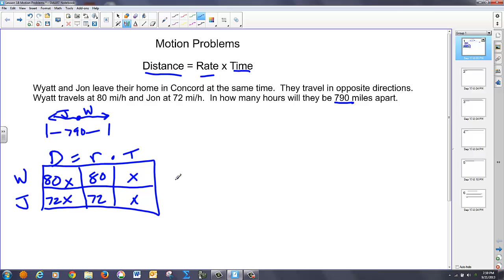So that's why I write my equation. I say Wyatt's distance plus John's distance is equal to 790. But I do that now in terms of one variable, X. So Wyatt's 80X, John is 72X. Those are equal to 790. These are like terms, so I add those up. So that's 152X.